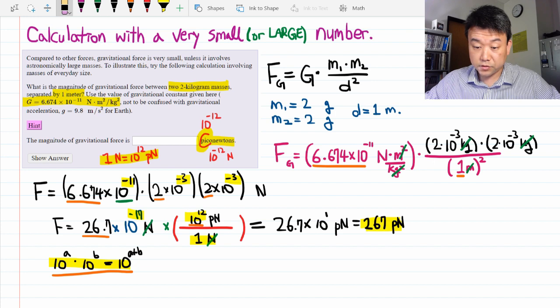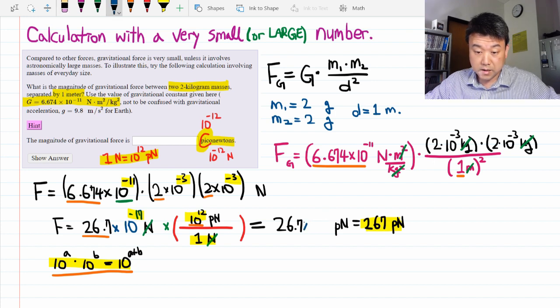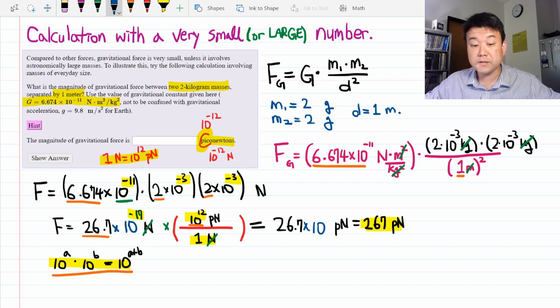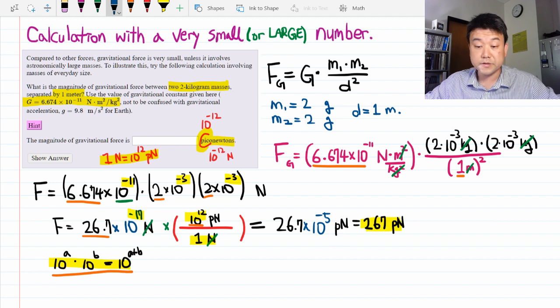All right, then instead of this being 10 to the power of 1, it's actually going to be 10 to the power of minus 17 plus 12, so minus 5 piconewtons. So in this scenario, that's the answer.